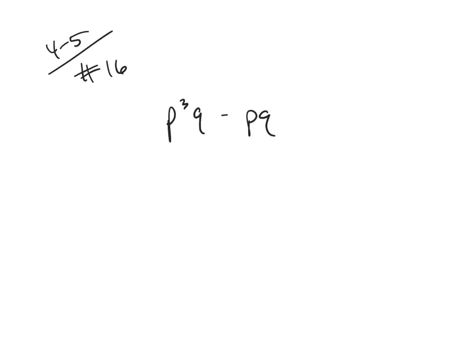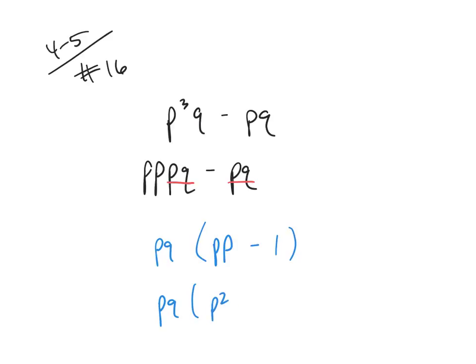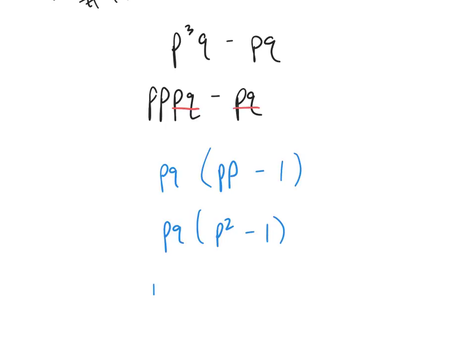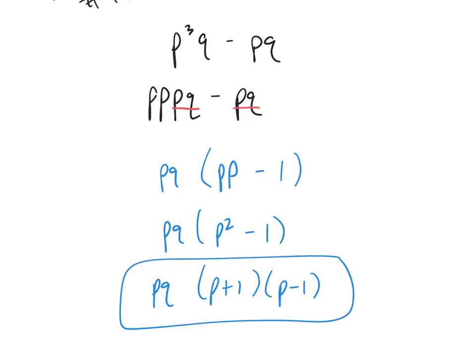For the problem P³Q - PQ: I recognize that PQ is in both terms. Thinking of prime factorization, PQ comes out front. When I take PQ out, I'm left with P² - 1. Then P² - 1 is the difference of two squares, which factors as (P + 1)(P - 1). So the answer is PQ(P + 1)(P - 1). Always go GCF first, then look for a special technique.